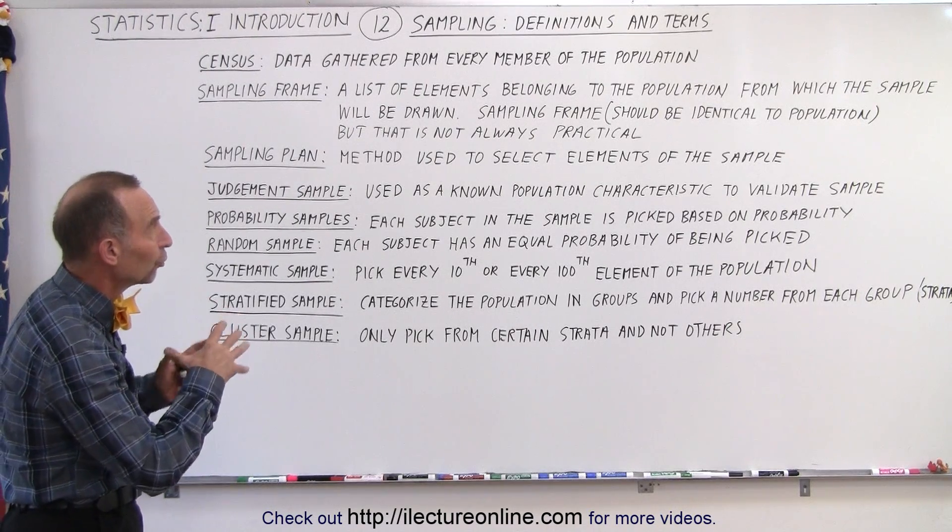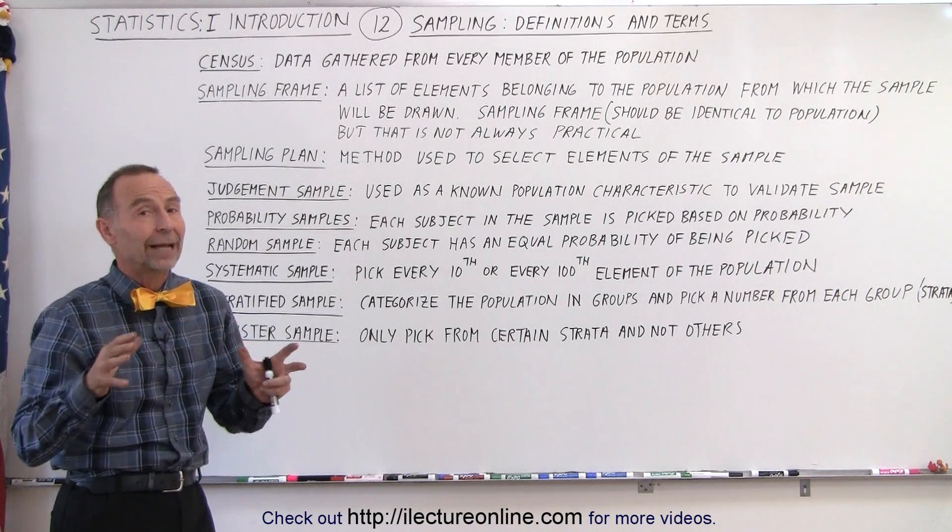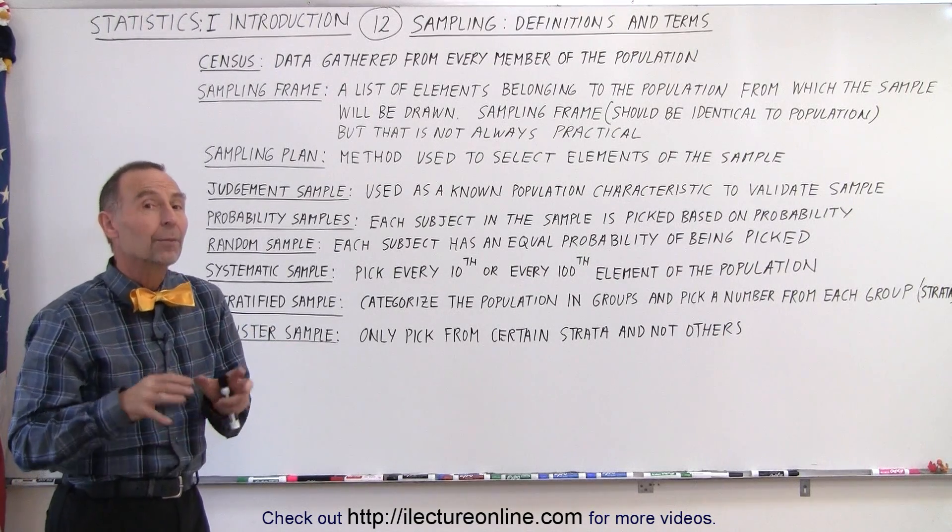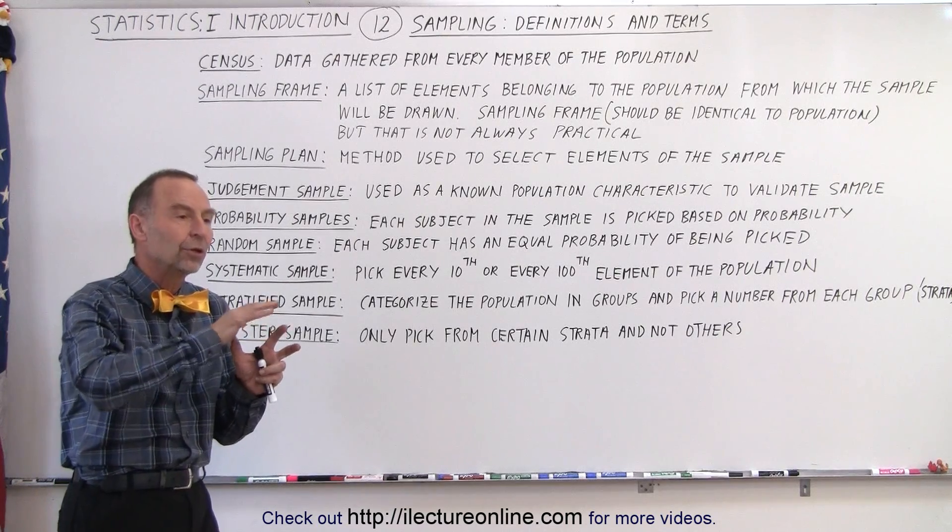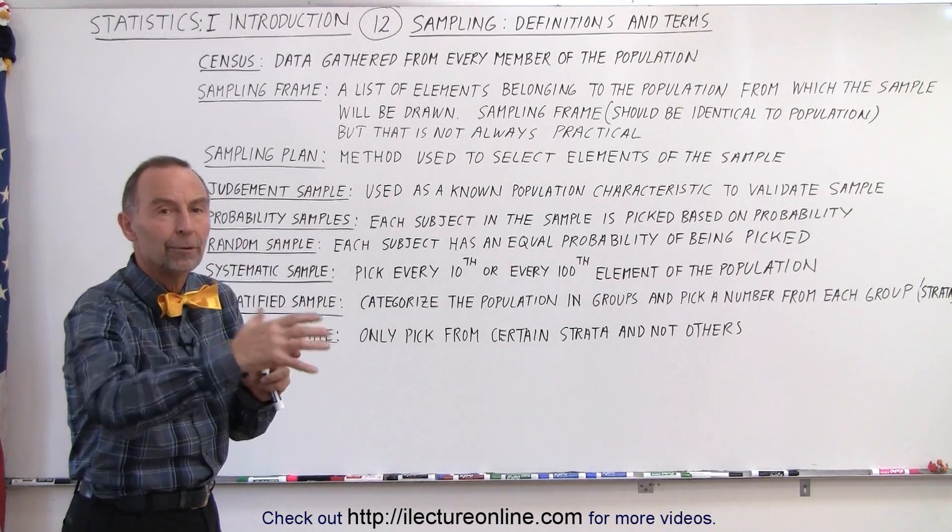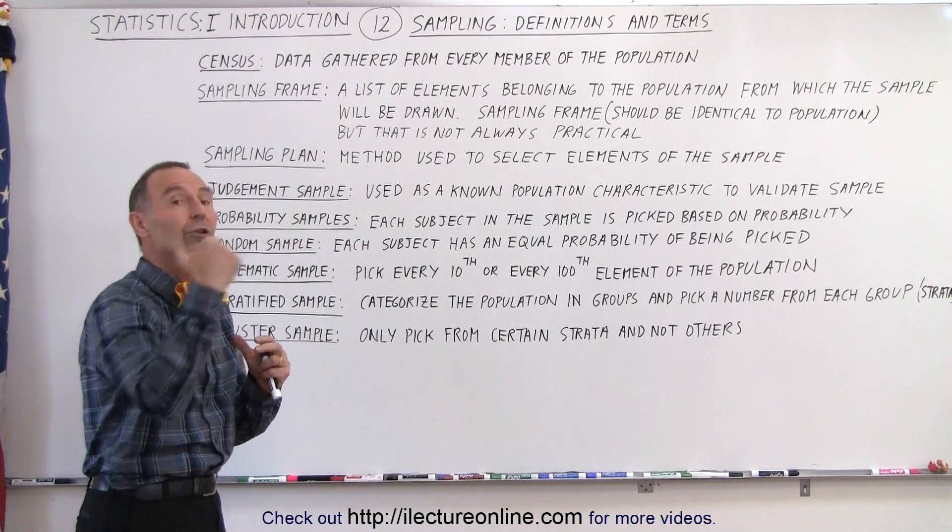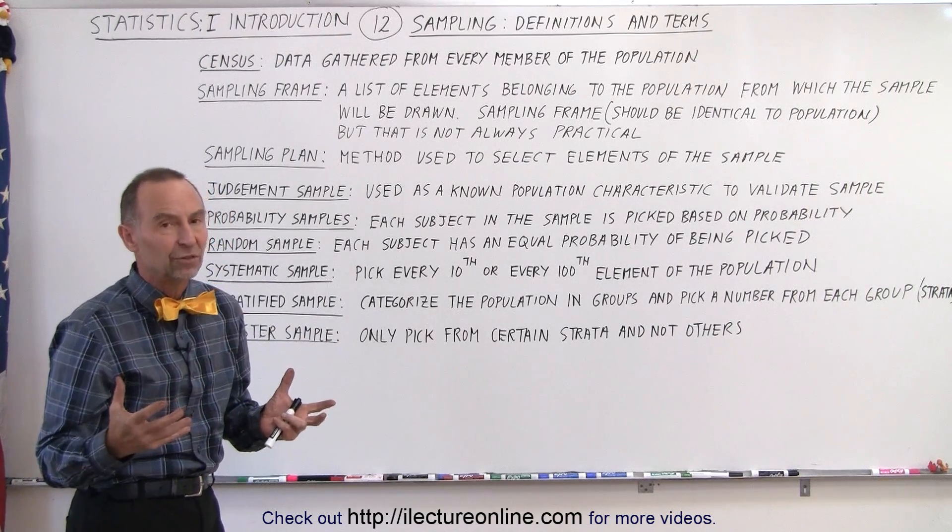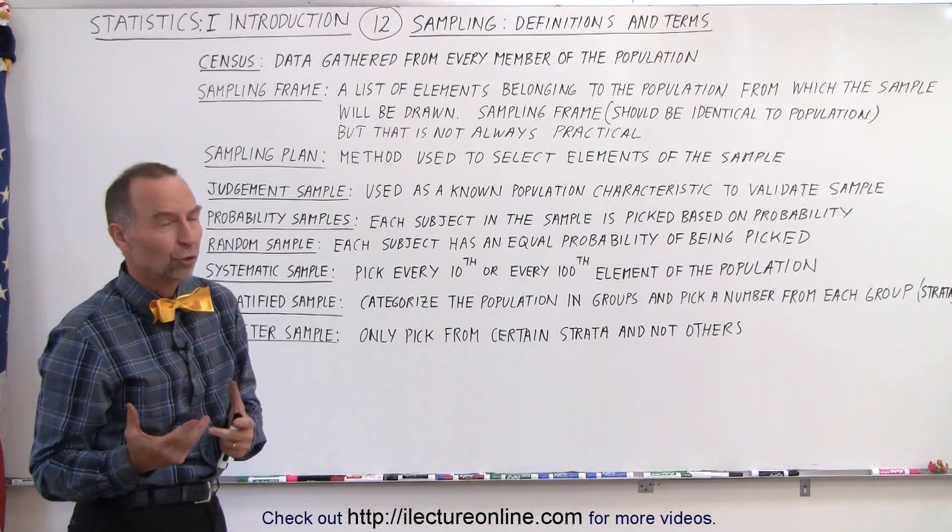So therefore, the list of elements don't always belong to the exact population. Ideally, you want it to be, but sometimes you use a sample not always all of the members of the sample belonging to the population, to still try to represent the population. Sometimes we don't have a choice.